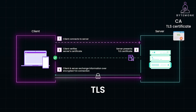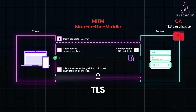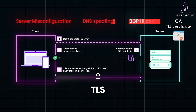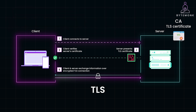While TLS is designed to protect against man-in-the-middle attacks, or MITM attacks, it's not foolproof. The security relies heavily on the integrity of certificate authorities. A compromised or malicious CA could issue fraudulent certificates, allowing an attacker to impersonate a legitimate server. There have been real-world cases where hacked CAs issued false certificates, enabling successful MITM attacks. Other factors like server misconfigurations, DNS spoofing, or BGP hijacking could also make TLS connections vulnerable — for example, when an attacker redirects traffic to a malicious server presenting a valid but fraudulent certificate, and the client might not even realize it's talking to the wrong server.